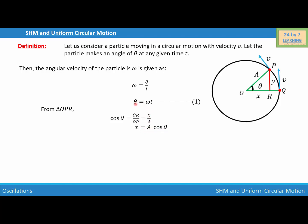And from equation number one, we know that theta is equal to omega t. So I'm going to substitute omega t over here. And if I do that, I will write x is equal to a cosine omega t. And this is my equation number two.